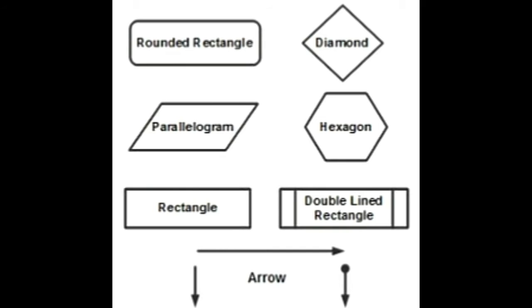Either one of the arrows can be pointing to a yes or no situation. While drawing, these arrows are always labeled. The hexagon is also known as a decision symbol, and it is used to indicate the beginning of a repetition pattern or structure in a process. The double-lined rectangle is not used very often; it is used at a point in an algorithm where a sub-program is introduced.